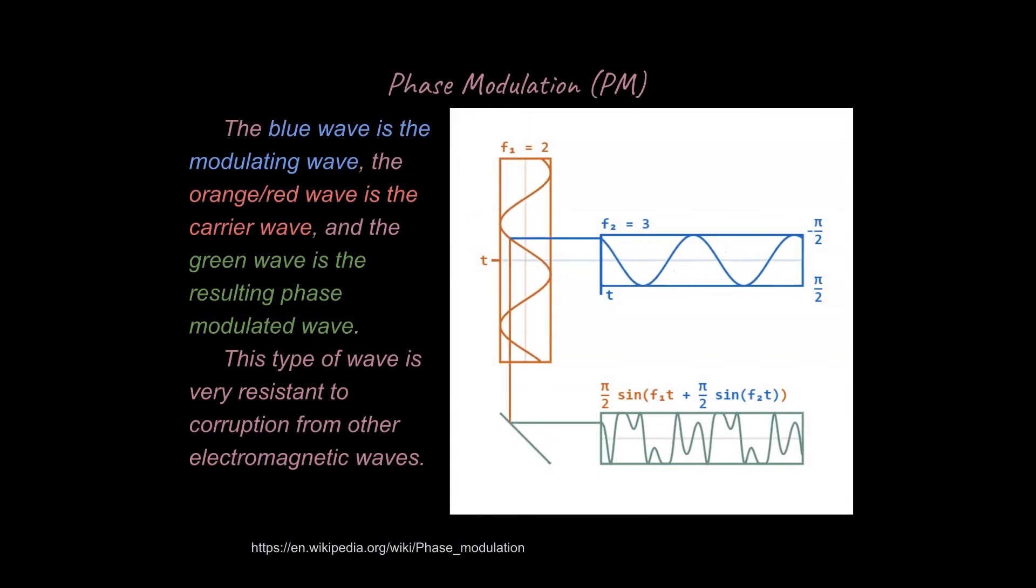All right, and so just to clarify over here, this is going to be your modulating wave, the blue wave. The orange-red wave is the carrier wave, so this is the oscillating wave that's created that will encode this information over here. And this green wave is the resulting wave, or the modulated wave as a result of this. And so one of the benefits of phase modulation is that it's very resistant to corruption. So you get a very clear signal if you're using something like phase modulation.